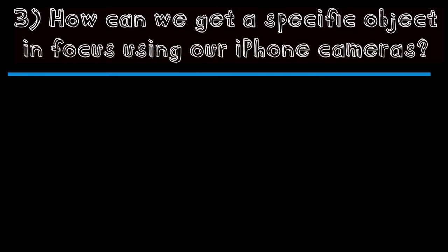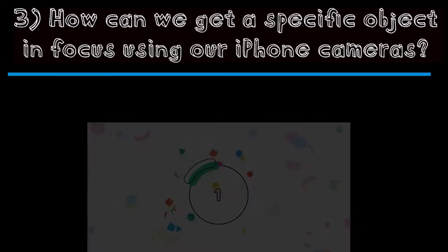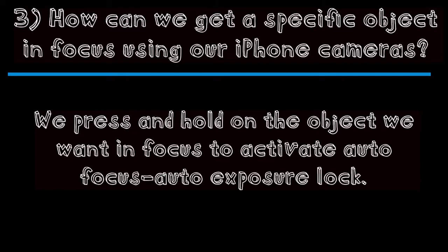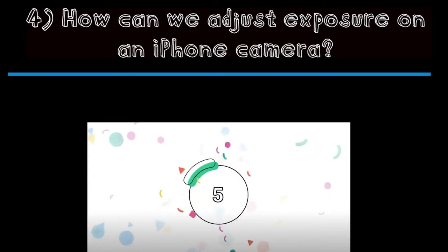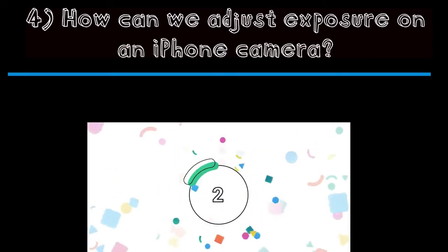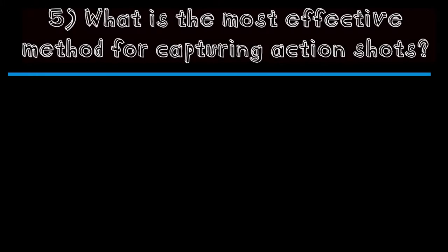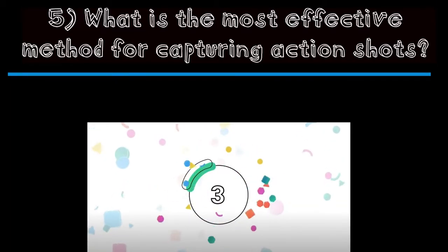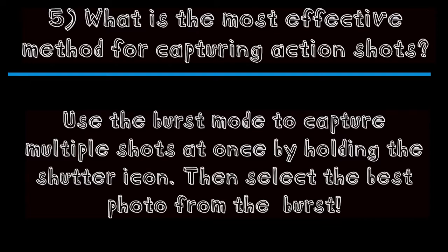Question three: how can we get a specific object in focus using our iPhone camera? The correct answer is we press and hold on the object we want in focus to activate autofocus and auto exposure. Question four: how can we adjust exposure on an iPhone camera? The correct answer is to tap and hold on the screen for a sun icon to appear, then drag up and down to adjust the exposure. Question five: what is the most effective method for capturing action shots? The correct answer is using burst mode to capture multiple shots at once by holding the shutter icon.